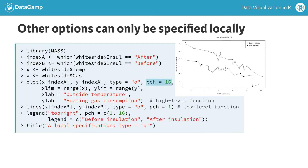Another example of a parameter that can be specified either way is pch, which defines the shapes of the points in either one plot if the parameter is specified locally, or in all subsequent plots if the parameter is set globally. Note that if we specify pch globally via the par function, we are effectively changing the default value from pch equals 1, for open circles, to something else of our choosing.